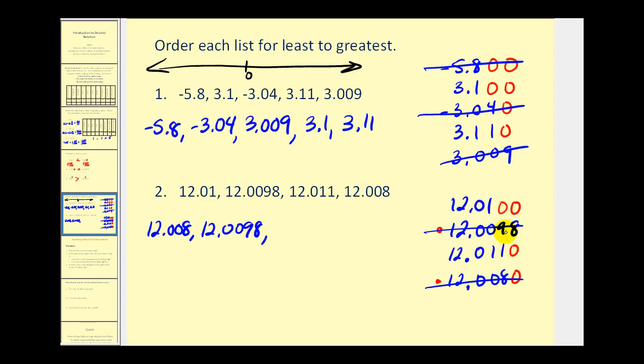If we look at the thousandths place, this has one thousandths. This doesn't have any. Therefore, 12.01 would come next, followed by 12.011.